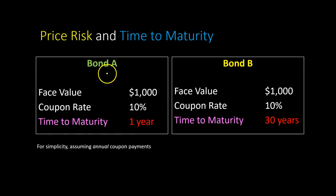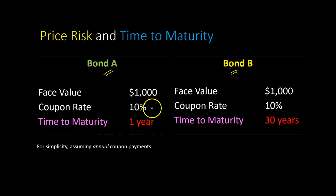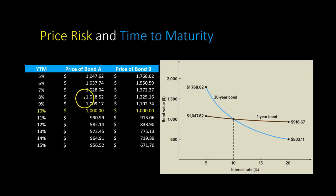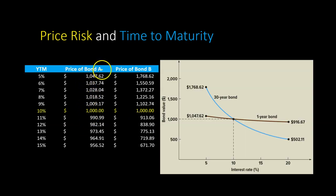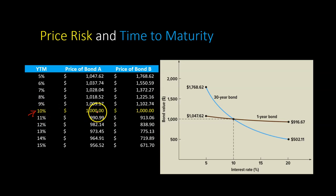So let me explain. Consider two bonds, A and B. Both bonds are otherwise identical in the sense that they have the same face value and the same coupon rate — in other words, they make the same magnitude of coupon payments. The only difference is that bond A is going to be maturing in one year, whereas bond B is going to be maturing in 30 years. So bond B is a more long-term bond and bond A is a short-term bond. What I'm showing you here is what the prices of both bonds will look like for different yields to maturity.